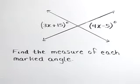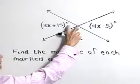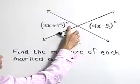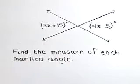Find the measure of each marked angle. Here we have two intersecting lines and vertical angles that are across from each other, and they are 3x plus 15 and 4x minus 5.